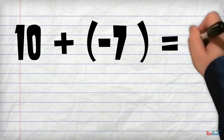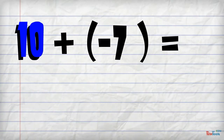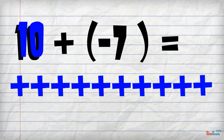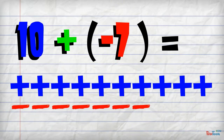Take a look at this problem: 10 plus negative 7. 10, or positive 10, means we start the problem with 10 positive tiles. Plus negative 7 means we add on 7 negative tiles.